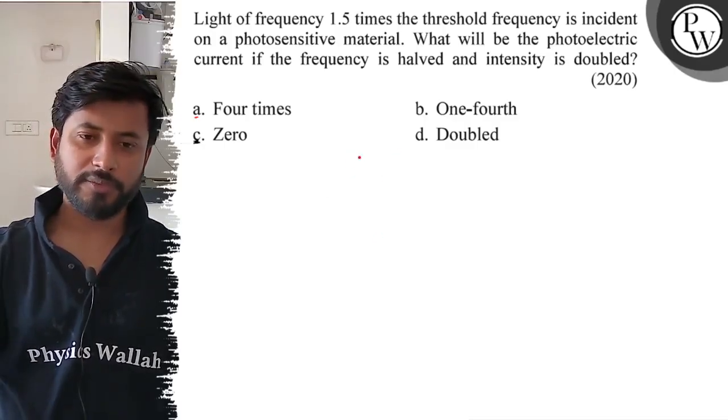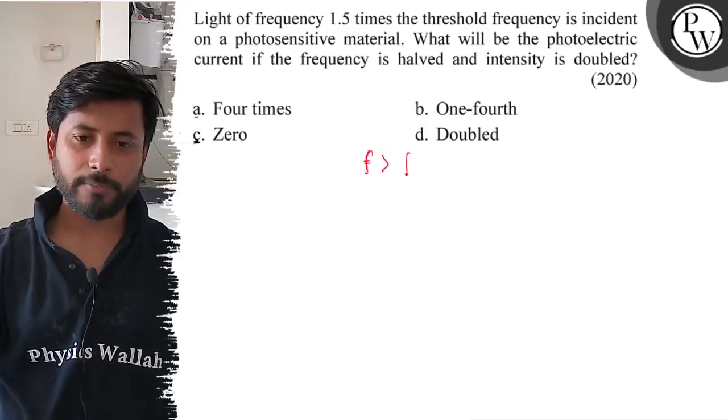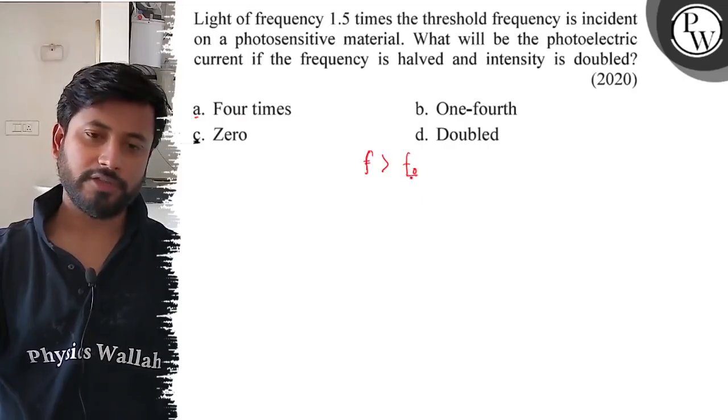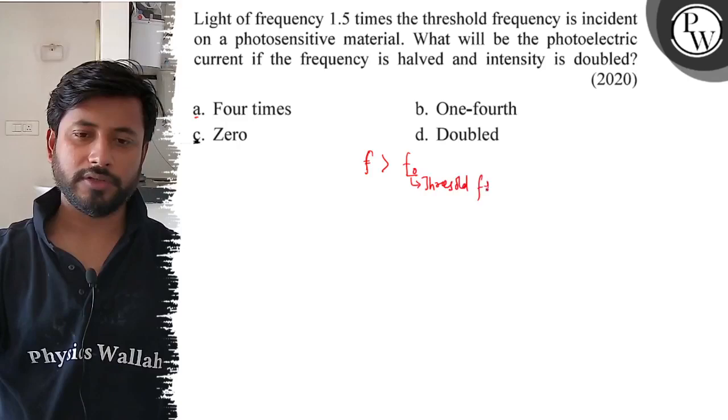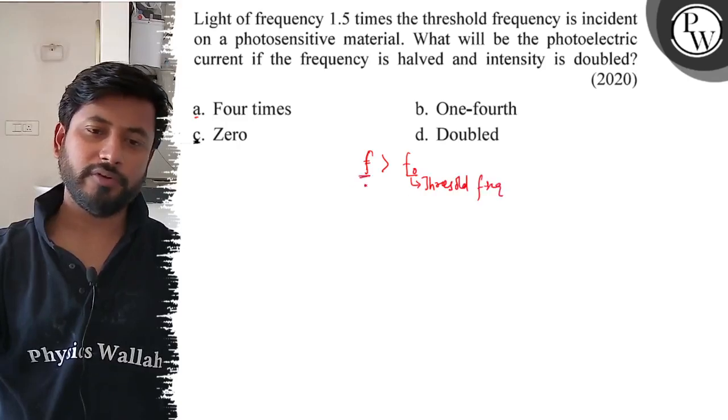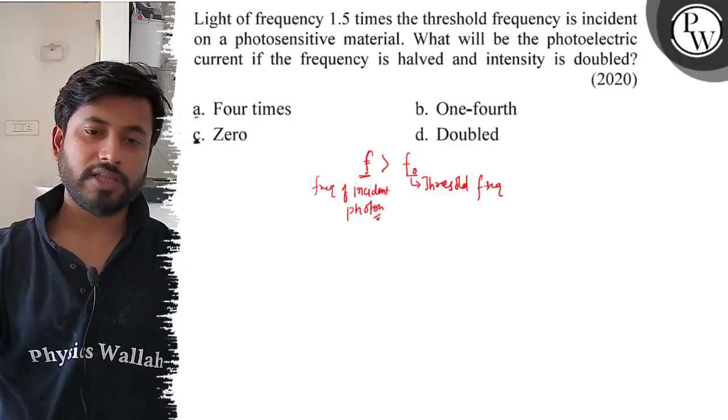So, the photoelectric emission should occur when frequency is greater than threshold frequency. This is the threshold frequency. So, the incident photon frequency will be greater than threshold.